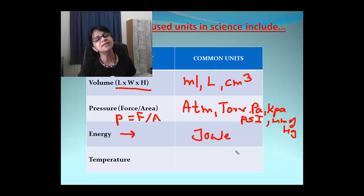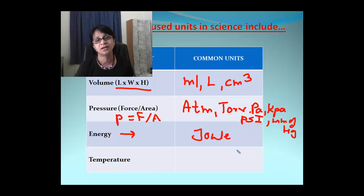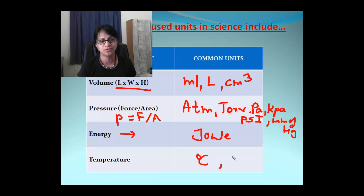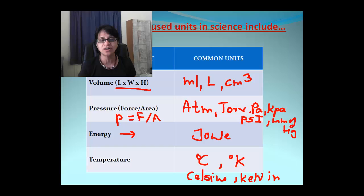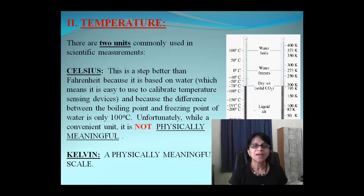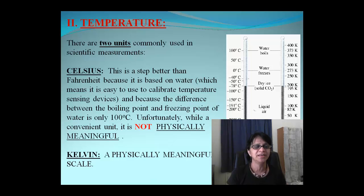Then comes temperature. In spite of the fact that Kelvin is the main unit for the SI system, we also use Celsius. So we have two units: Celsius and Kelvin. As we talked earlier, we will also do the conversion between both units. So let's move on. Let's talk about the two temperature units mainly which are used. As we mentioned, we have Celsius and Kelvin.